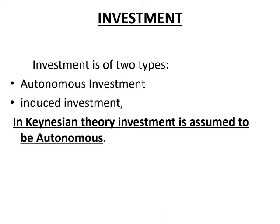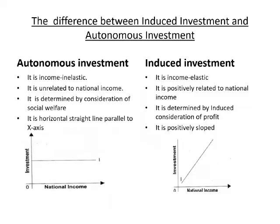Investment is of two types: Autonomous Investment and Induced Investment. But in Keynesian Theory, investment is assumed to be Autonomous Investment only. Autonomous Investment is income inelastic and unrelated to National Income; it is determined by considerations of social welfare and is represented as a horizontal straight line parallel to the X-axis. Induced Investment is income elastic and positively related to National Income, determined by the expectation of profit, and has a positive slope.